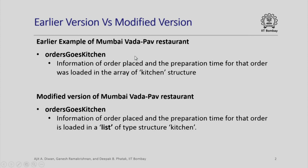You will recall that in the earlier version there was a function called 'order goes to kitchen' where the information of the order was placed and the preparation time for that order was loaded in an array. Now, instead of an array we would like to use a list. The same information about the order placed and the preparation time will be loaded in a list of type structure kitchen.